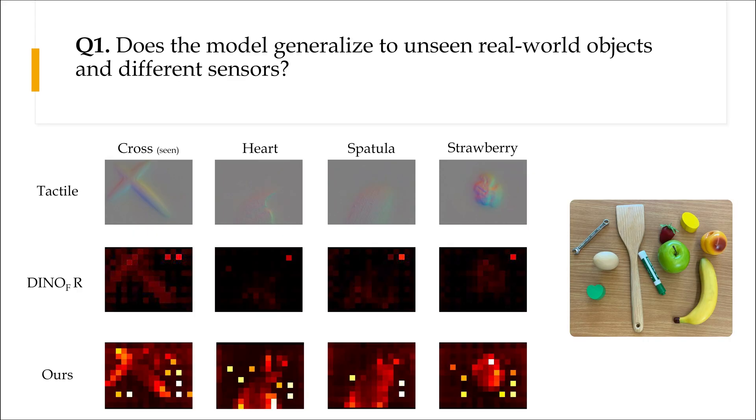To address the first question, we collect a dataset of 10 real-world indenters. Notably, the attention map of our model shows it successfully learned to focus on contact area, demonstrating negligible difference in performance for seen and unseen objects.